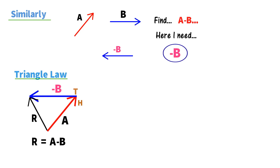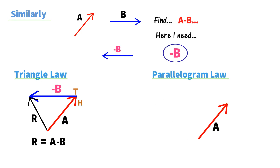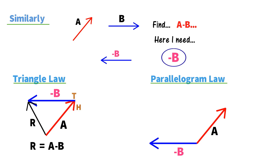I can also find vector subtraction using the parallelogram law. I take vector a, then take the negative vector of b, and join the tail of negative vector b with the tail of vector a. The resultant vector's tail is joined with the tail of vector a and the tail of the negative vector of b. This gives the subtraction of two vectors using the parallelogram law.